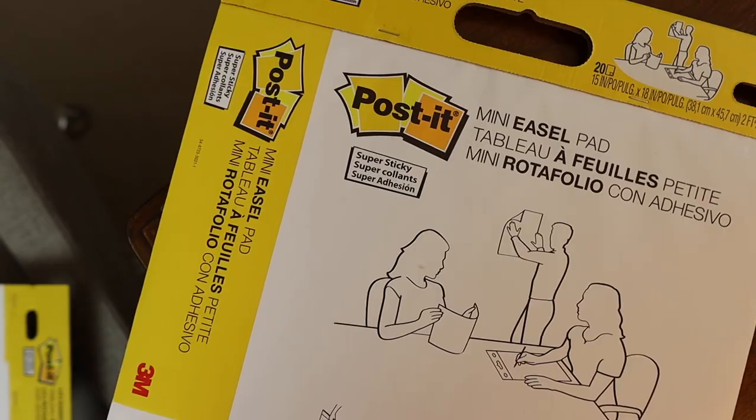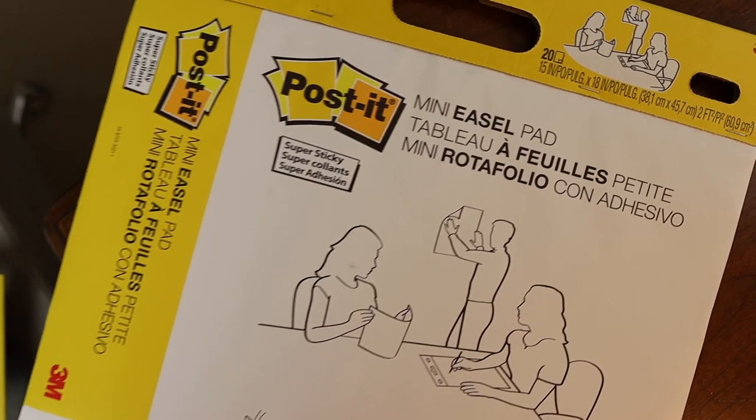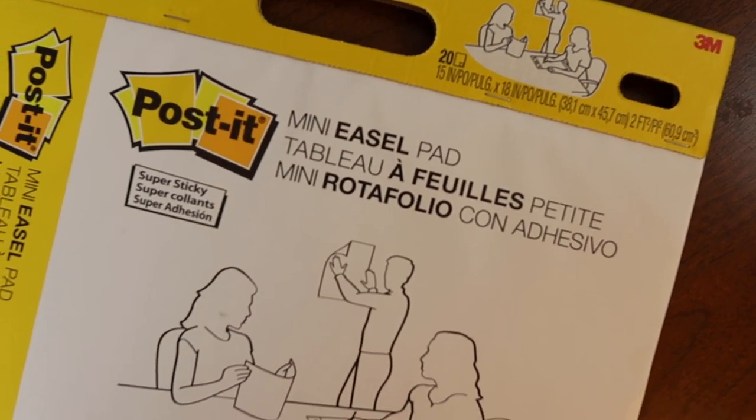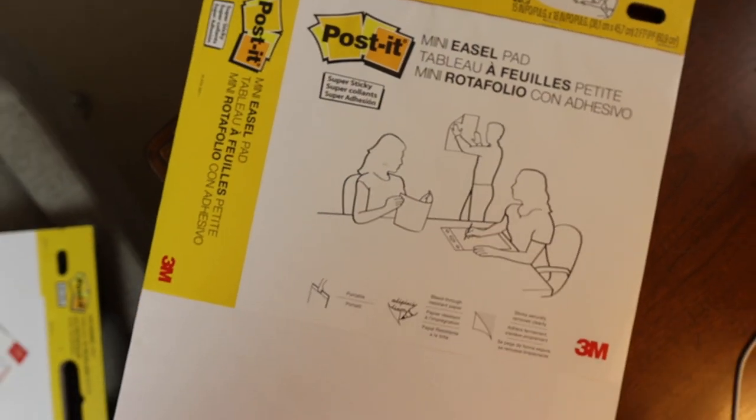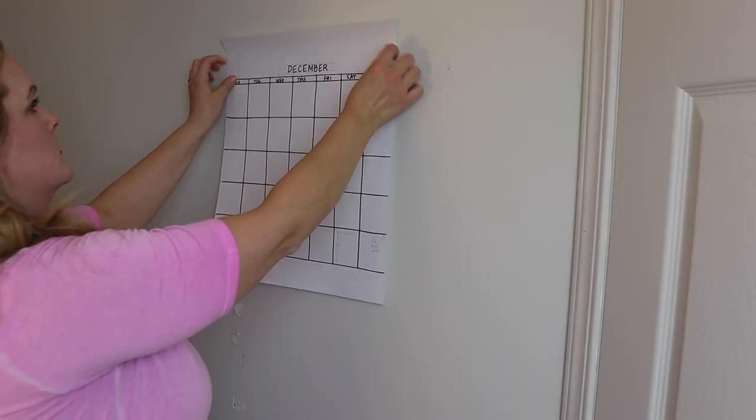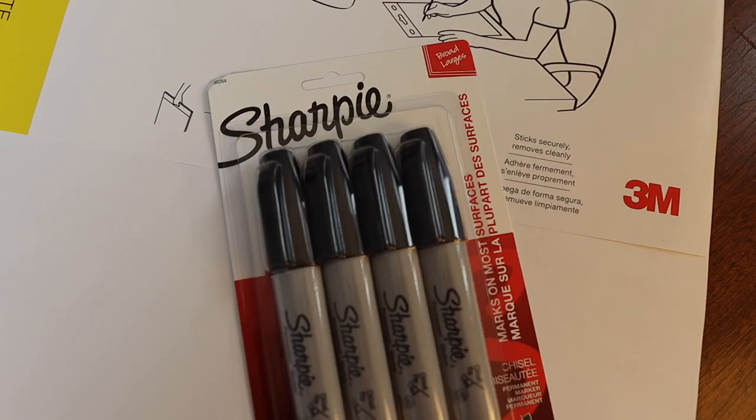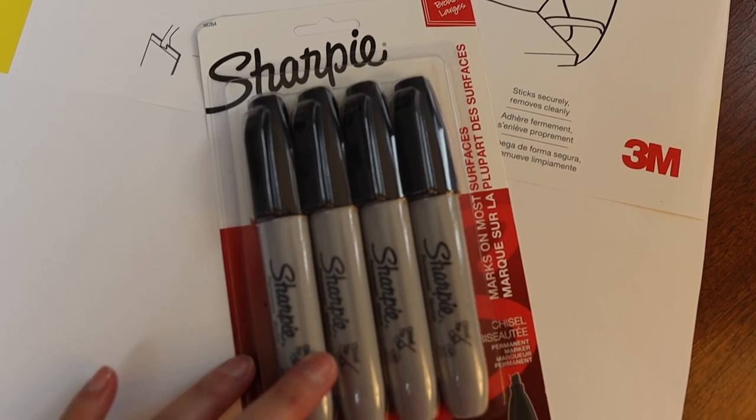We do need some supplies here, so I'm using the 15 inch by 18 inch Post-it notes. This is called the mini easel pad. They really do stick to your wall, it really works. I also have a new pack of black chisel Sharpie markers.